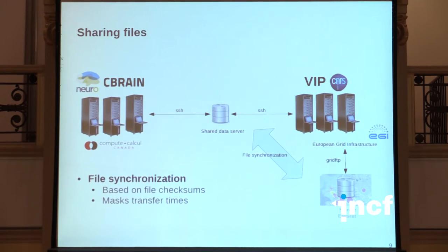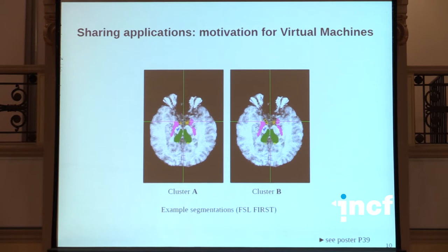The final thing I'd like to talk about is the exchange of pipelines between the two platforms. Before diving into the implementation, we realized that exchanging pipelines across platforms would quickly raise reproducibility issues. When we execute a pipeline on different operating systems or environments, we may get different results, and we didn't want to increase that problem. So what we decided to go for, for this interoperability work, is to transfer virtual machines between the two platforms.